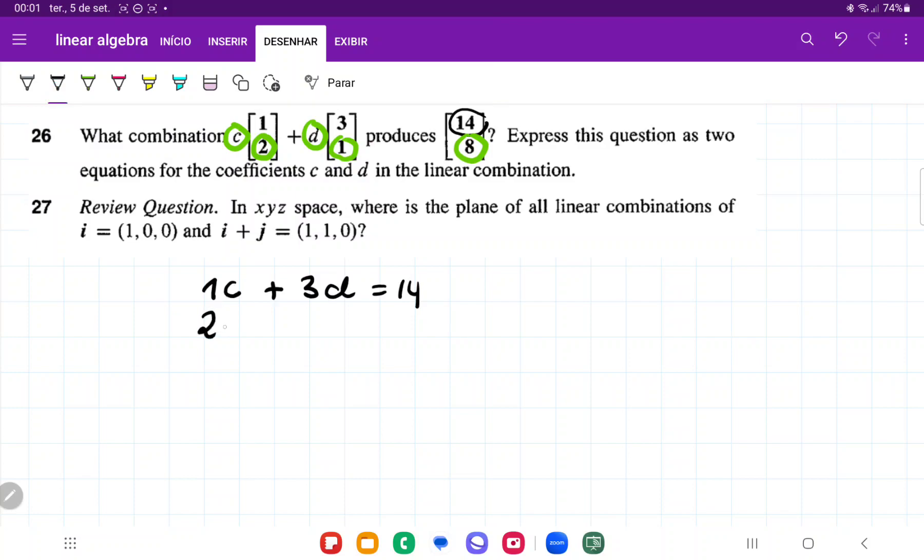So we have 2c plus 1d equals 8. What we're going to do is multiply this whole first equation by negative 2, and then we're going to add these equations.